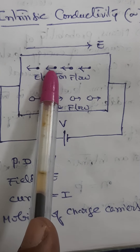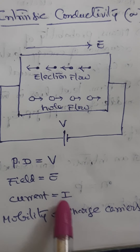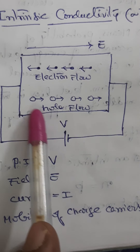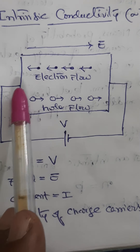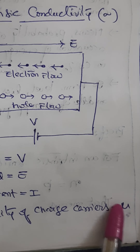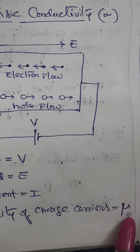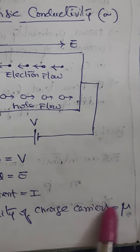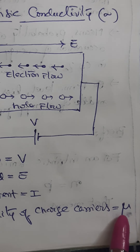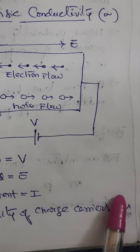Because of this drift and flow, a current I is constituted. Now because the electrons are drifting, there is a mobility of charge carriers. Mobility is always represented by the symbol mu. Electron mobility is represented as mu_e (or mu_n), and hole mobility is represented as mu_h (or mu_p).